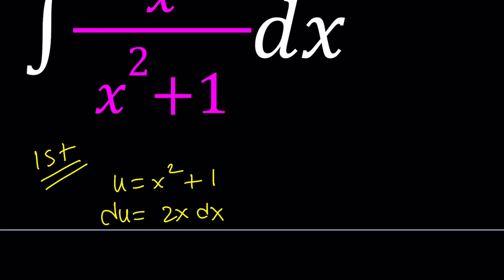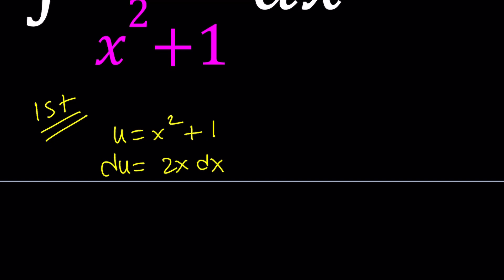Whenever you have two polynomials, most of the time, you pick the one with the higher power, especially if they're one apart. What happens if they're two apart? That's a different story. So in another video, maybe we can talk about x divided by x cubed plus 1 dx. To continue the problem, we're going to notice that we don't have 2x dx, we only have x dx, which means we have to multiply both sides by 1 half to get x dx.